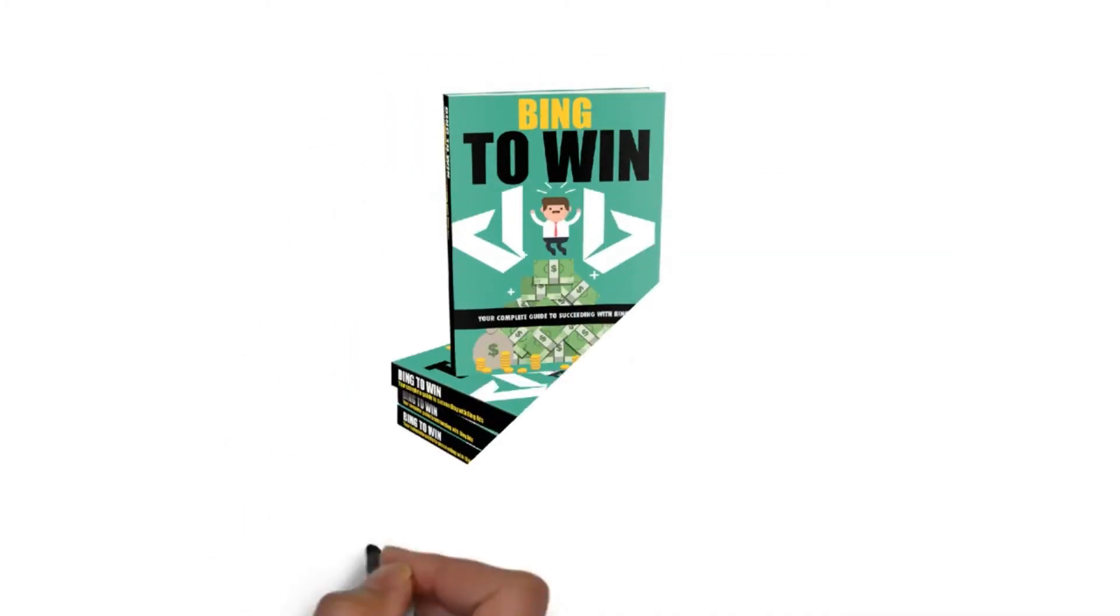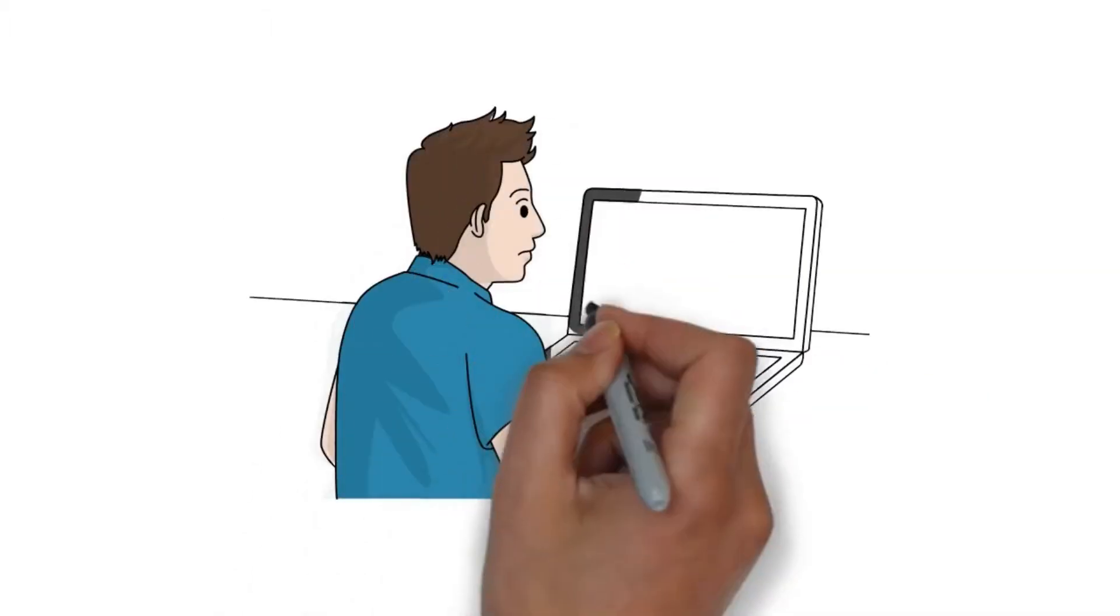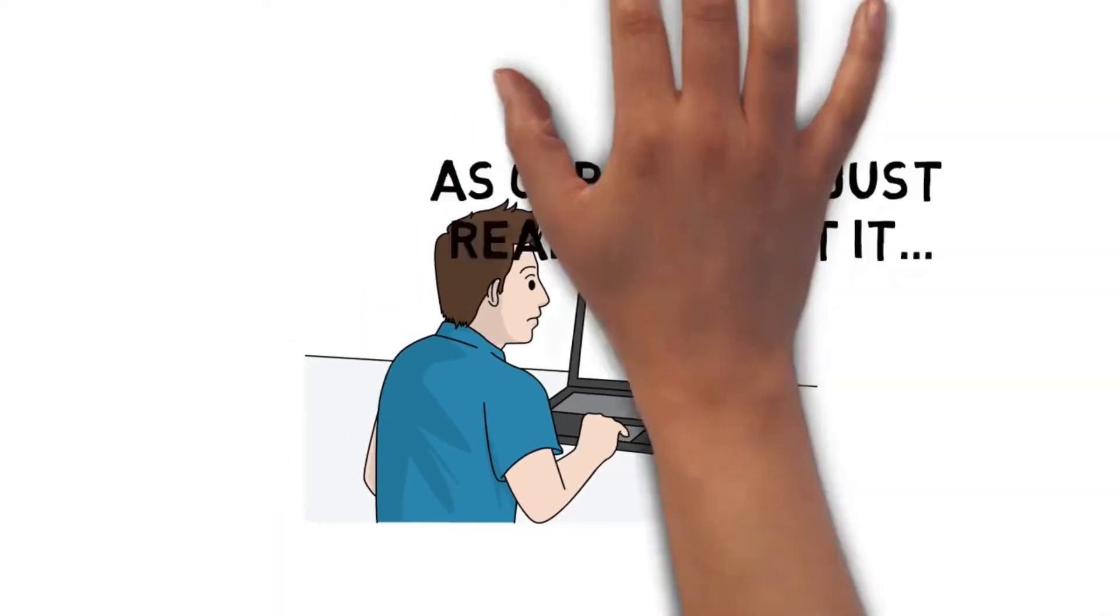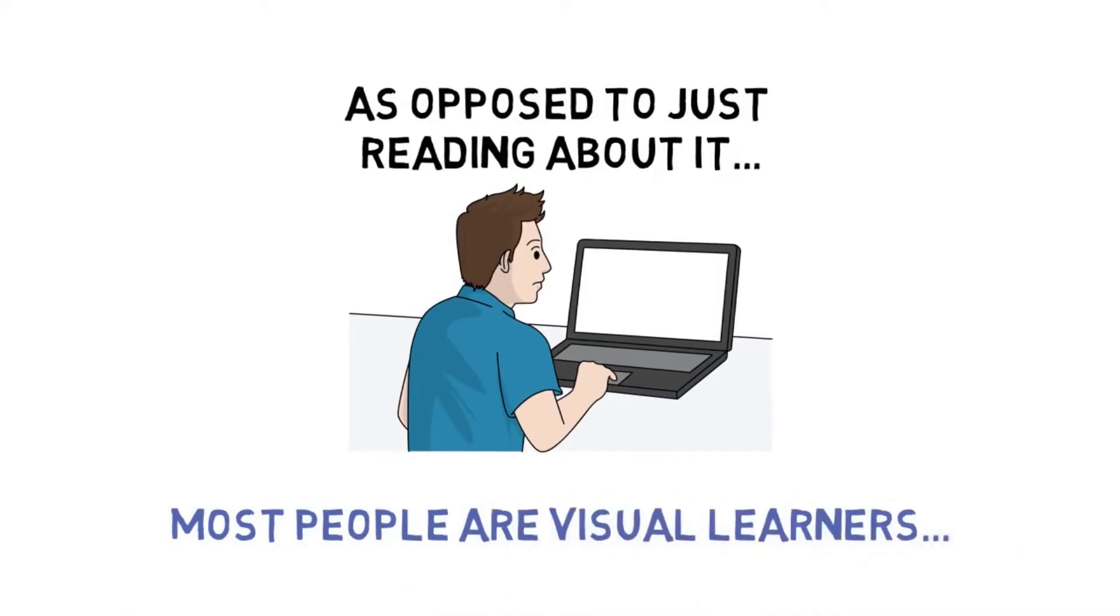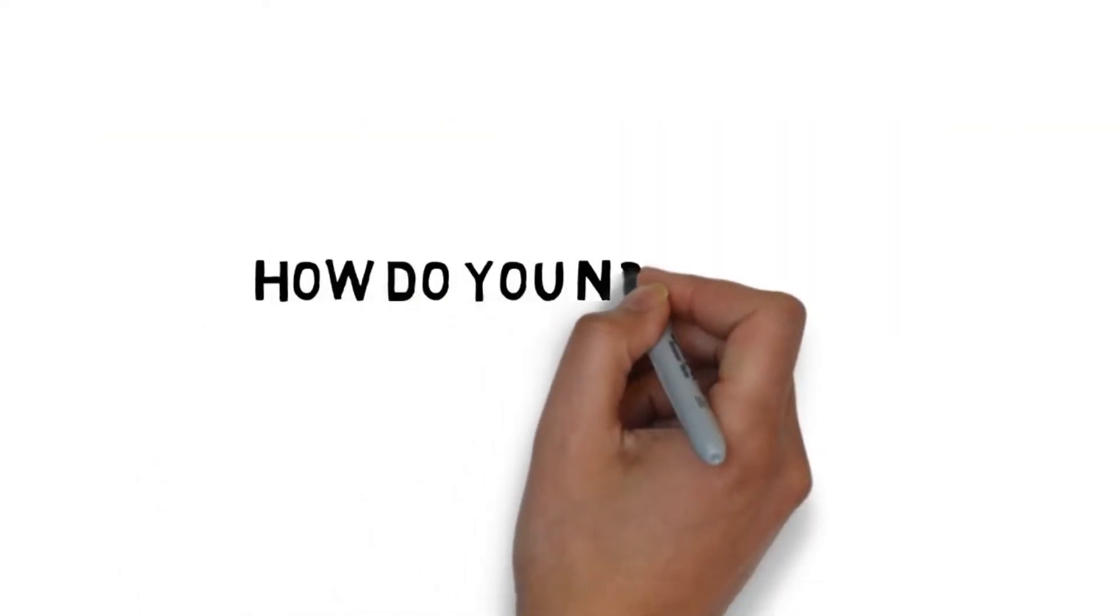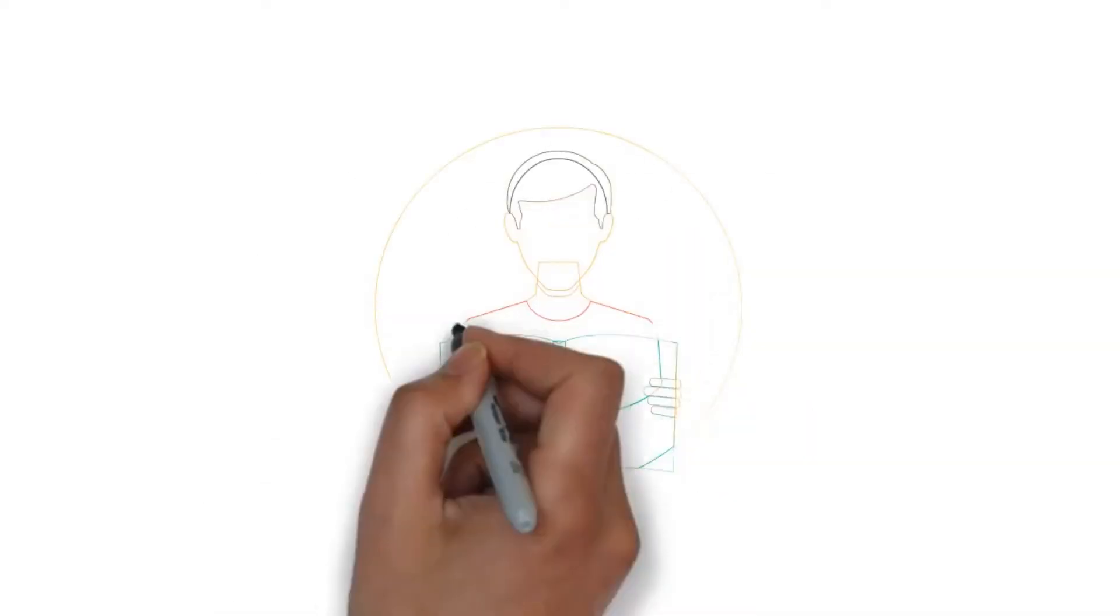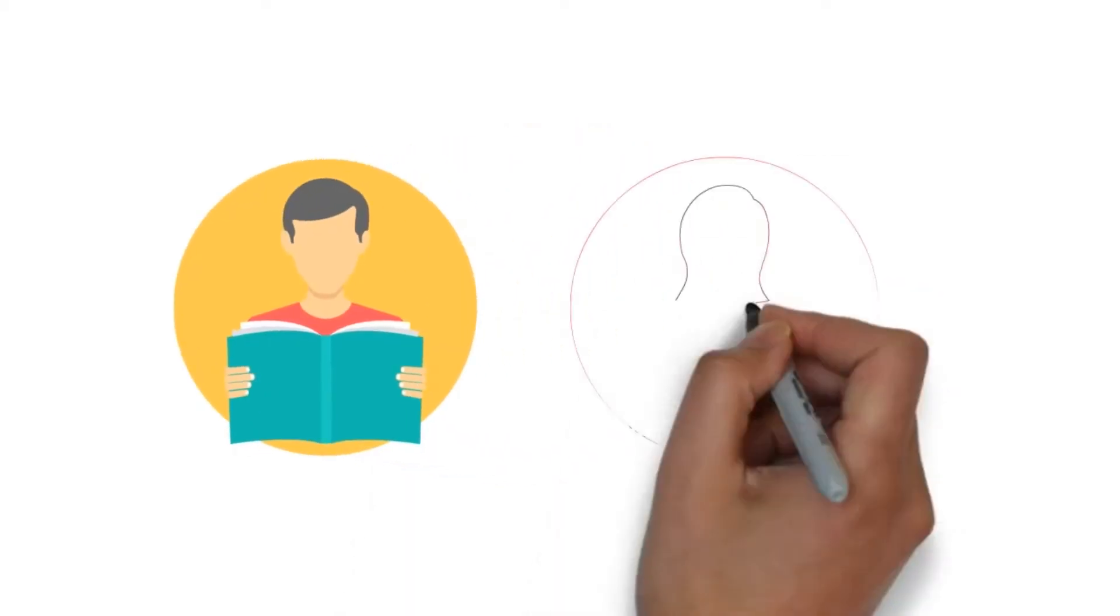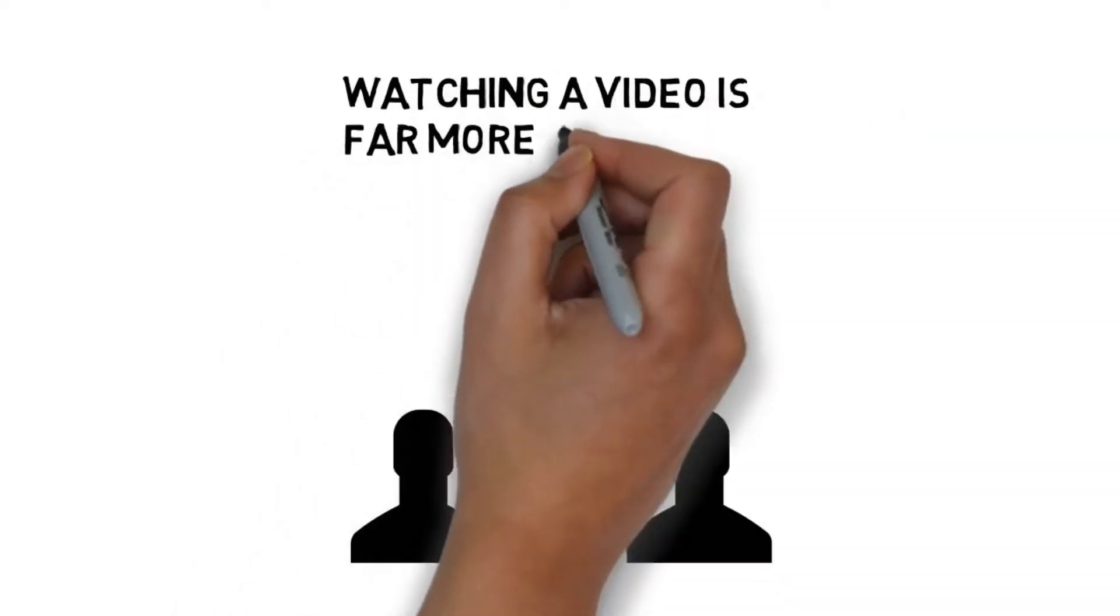Although the guide you just purchased is written in a step-by-step format, many people learn much better by watching something done as opposed to just reading about it in a guide. That's because most people are visual learners. How about you? How do you normally learn the best? Would you rather read through a training course or would it be easier to get results if you could watch a video training that shows you exactly how to do it? If you're like most people, watching a video is far more effective than going through a text-based course alone.